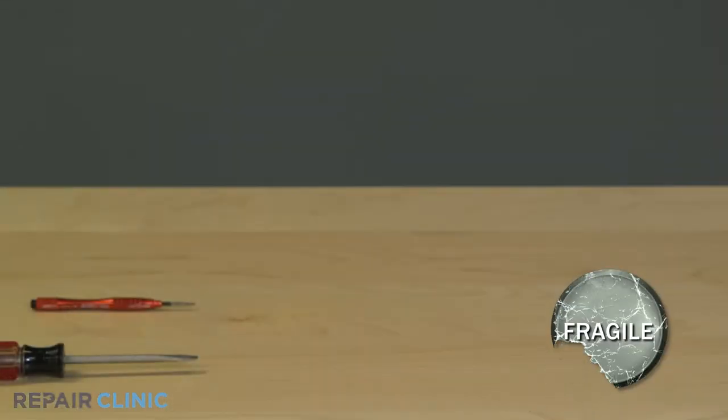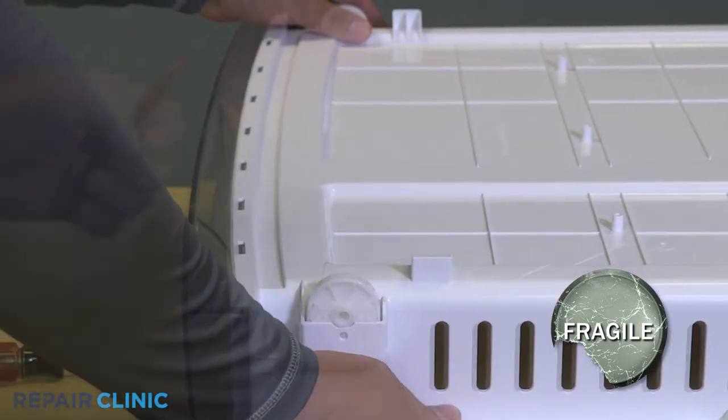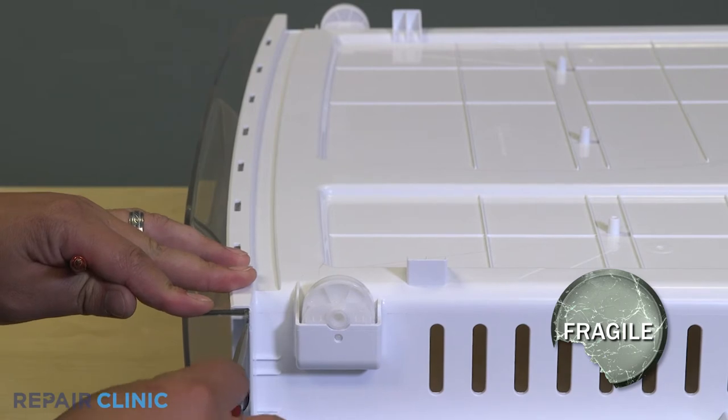Set the freezer tray on a flat surface and use the screwdrivers to pry the face off. Pull the tabs of the face up as you work your way down the tray.